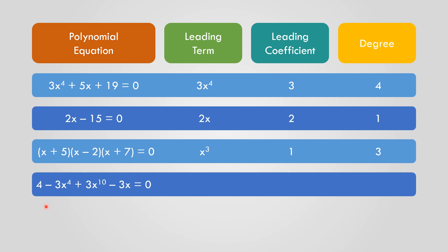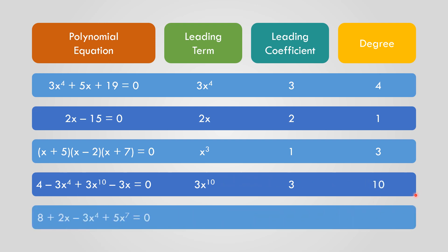Number 4: 4 minus 3X to the 4th plus 3X to the 10th minus 3X equals 0. The leading term is 3X to the 10th. The leading coefficient is 3. The degree is 10. Number 5: 8 plus 2X minus 3X to the 4th plus 5X to the 7th equals 0. The leading term is 5X to the 7th. The leading coefficient is 5. The degree is 7.